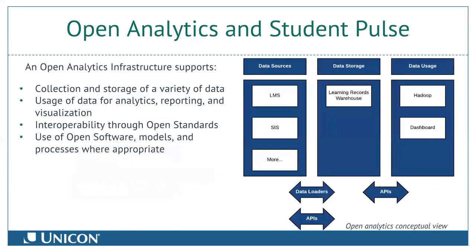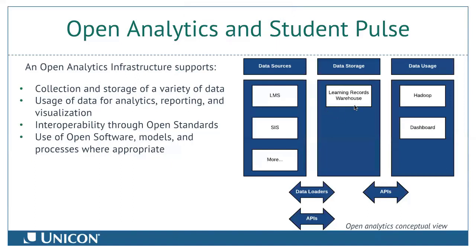On the technology side, this is a high-level picture of the components in the open analytics architecture. You gather data from various sources on the left, using standards where possible. All of that data flows into a centralized learning record warehouse. That warehouse holds activity data for all learners plus supporting data needed for analytics — things like courses, users, and person attributes. Once you have that consistent collection point, you can serve up that data in various ways depending on what you need — for example, primarily as a read-only, optimized query layer for dashboards.